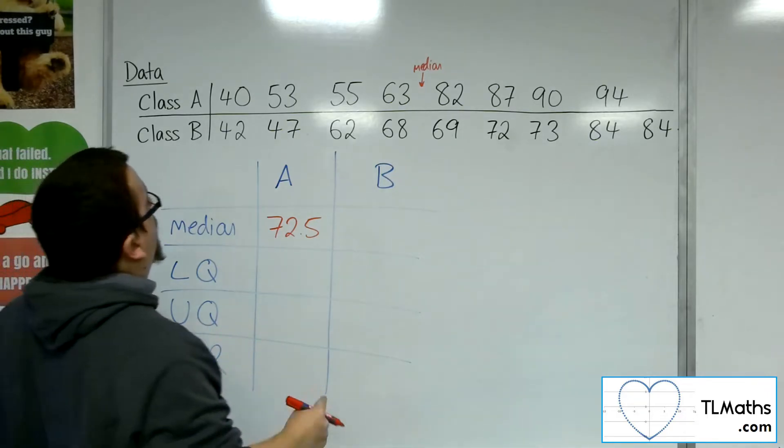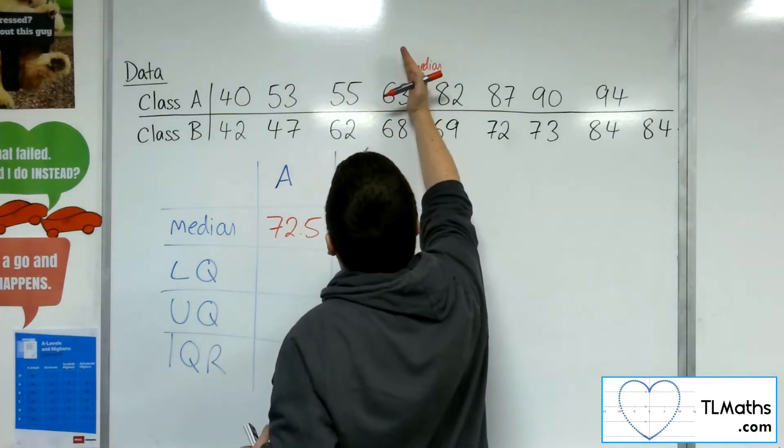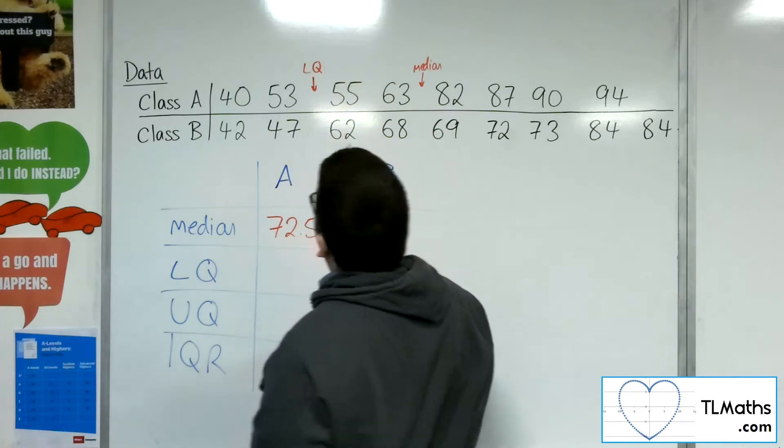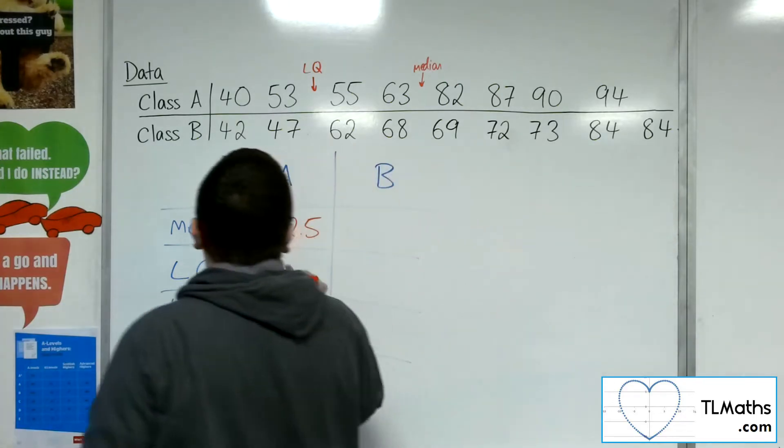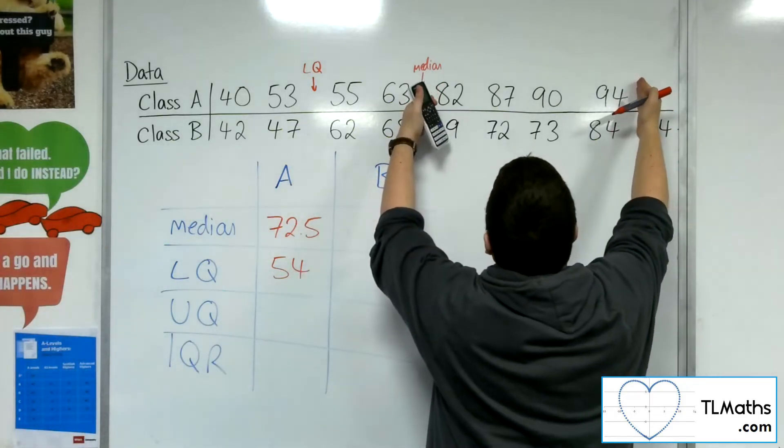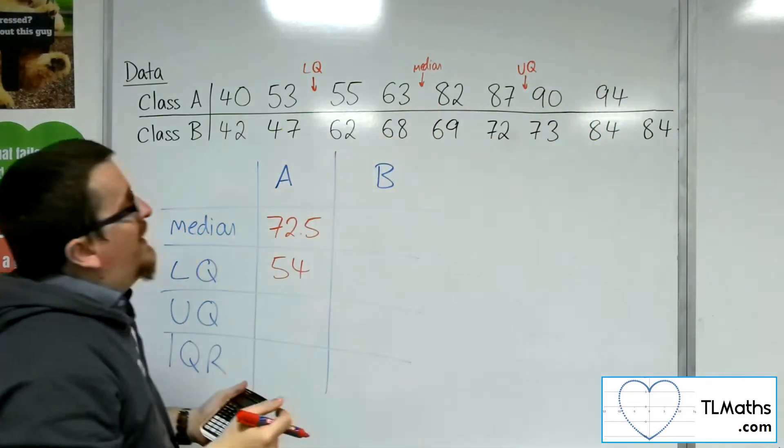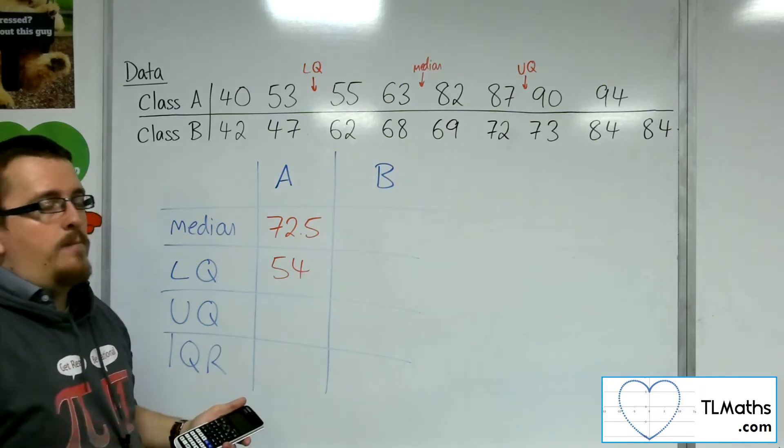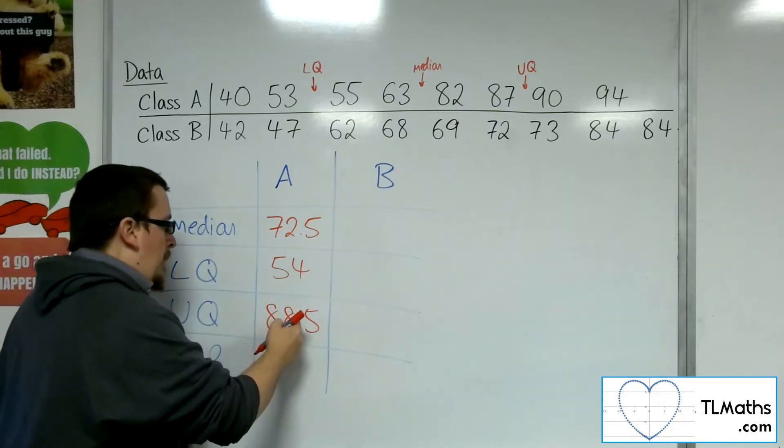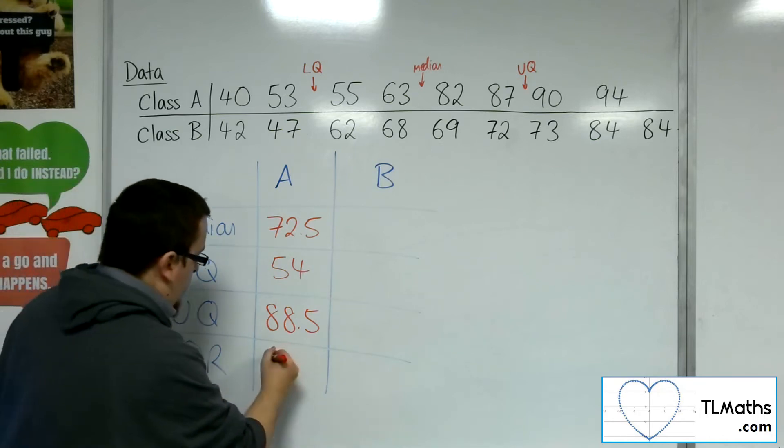Now the lower quartile for A is the median of the lower half, ignoring the median and up. So the median of those four numbers, which is going to be halfway between the 53 and the 55, so just 54. The upper quartile is the median of the top half, those four numbers there. So the upper quartile is halfway between 87 and 90, which would be 88.5. So the interquartile range is the upper quartile take away the lower quartile. So 88.5 take away 54 gets us 34.5.